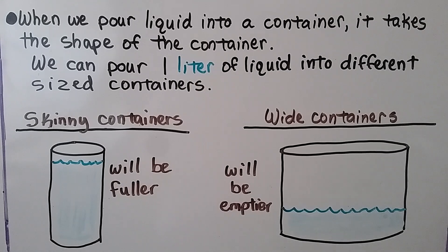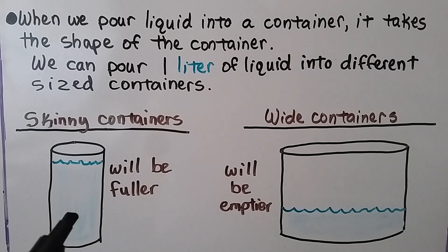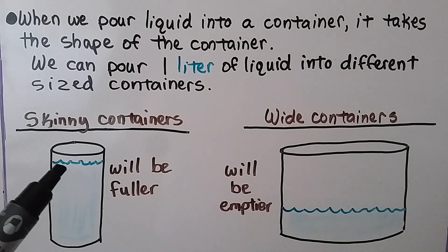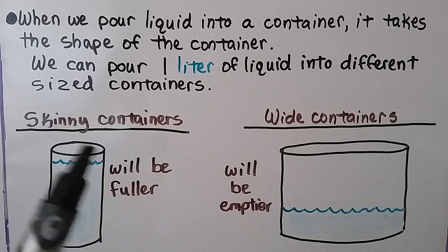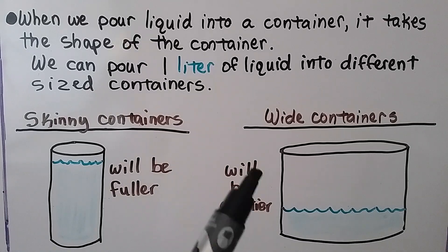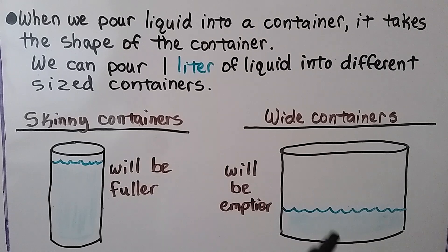We can pour one liter of liquid into different sized containers. If it's a tall skinny container, it will be fuller. A wide container that's the same height but wider will be emptier. This container is wider so it can hold more.